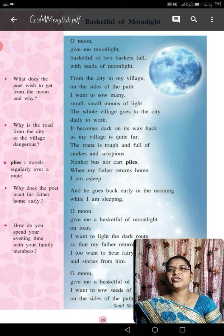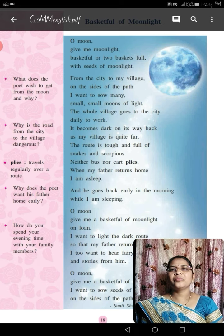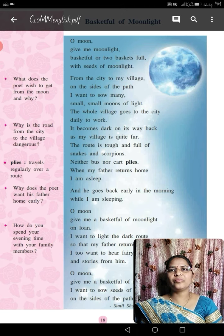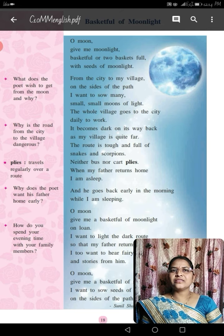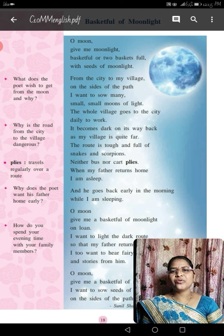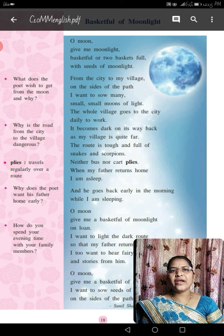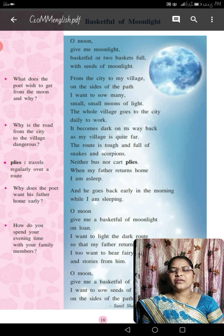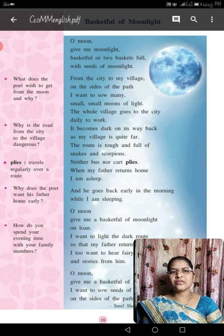The first stanza reads: 'O moon, give me moonlight, basketful or two baskets full, with seeds of moonlight. From the city to my village, on the side of the path, I want to sow many small, small moons of light.' In this stanza, the child is requesting the moon to give him basketful or two baskets full of moonlight, and also the seeds of moonlight, so he can sow them on both sides of the path linking the city to his village.